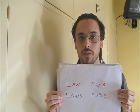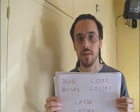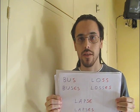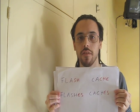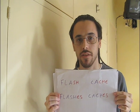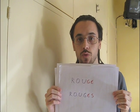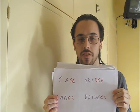Words ending in vowels or voiced consonants: law → laws; pub → pubs. Words ending in sibilants, starting with words ending in S: bus → buses; loss → losses; lapse → lapses. Words ending in Z: rose → roses. Words ending in SH: flash → flashes; cash → caches. Words ending in ZH: rouge → rouges. Words ending in CH: church → churches; clutch → clutches. And finally, words ending in J: cage → cages; bridge → bridges.